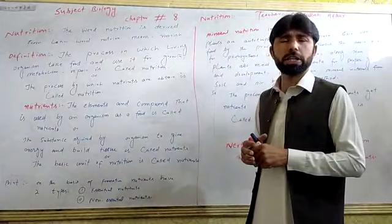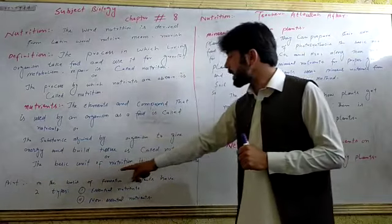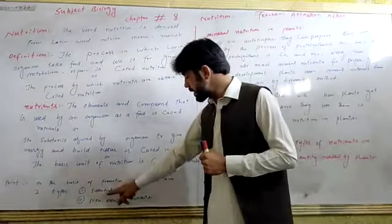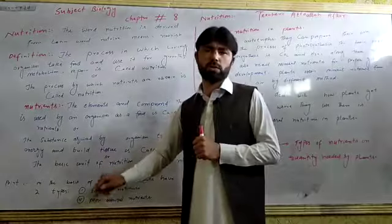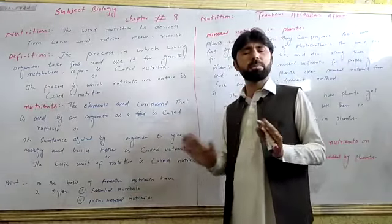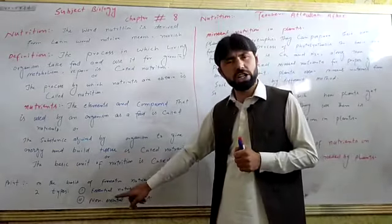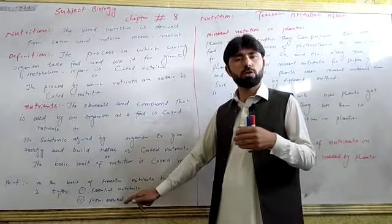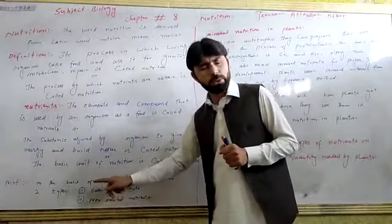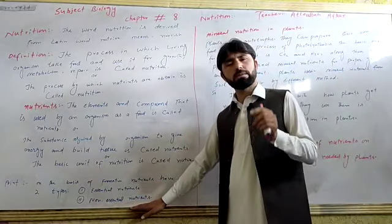The types of nutrients are categorized on the basis of formation. Nutrients have two types: essential nutrients and non-essential nutrients. Non-essential nutrients are the same as essential nutrients but are produced by the body itself.